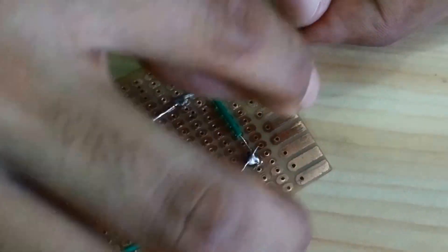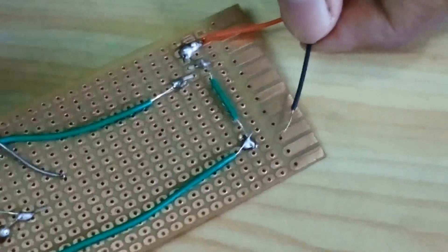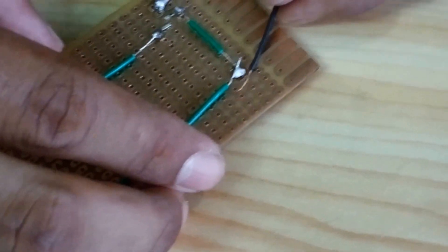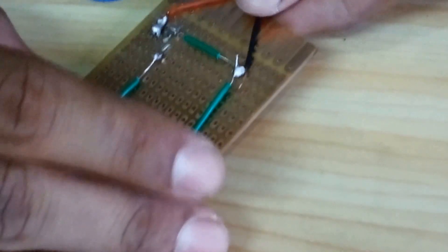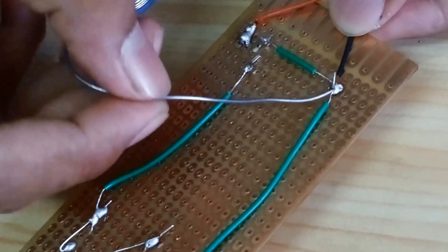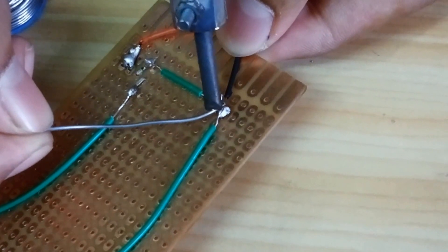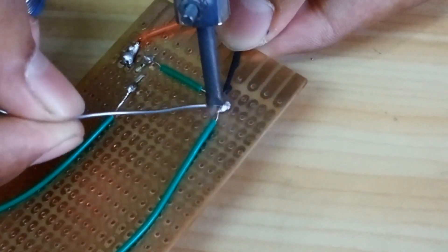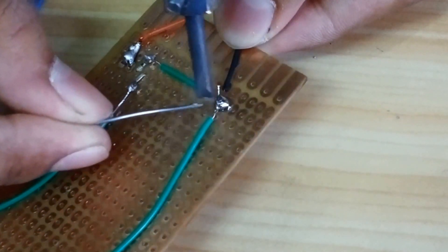And this black wire will be connected with the ground pin. Here is the ground pin. Here it is.